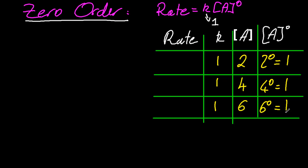So let's see what I get for the rate now. So rate is K times A raised to the zero. Well, so the rate is going to be one, one, and one. Let's see what that looks like on a graph.